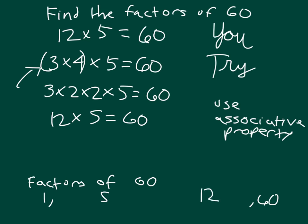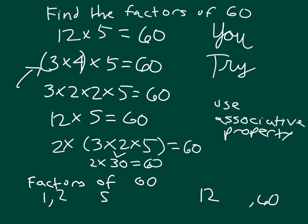So I know that I have 5 along with 12. I know I have 2 here along with 3 times 2 times 5. So it's 2 times 3 times 2 times 5, where there's 3 numbers that are being associated together. 3 times 2 is 6, times 5 is 30. So 2 times 30 gives us 60.